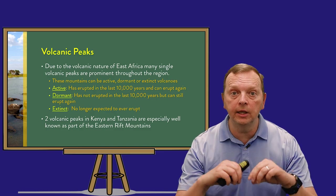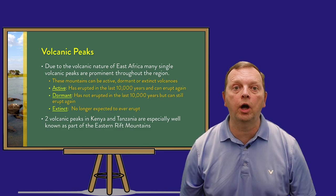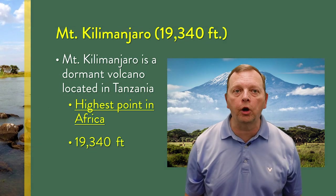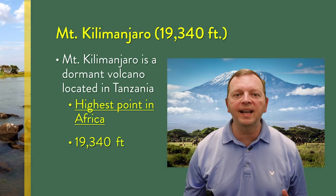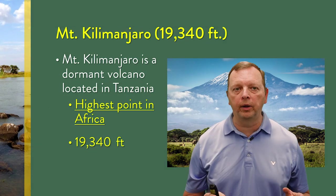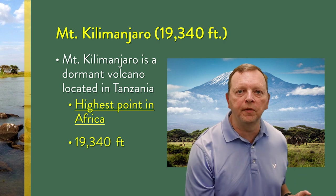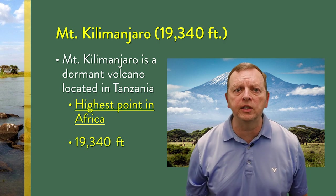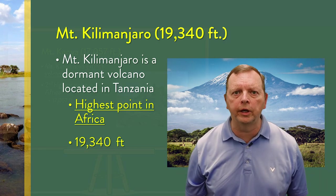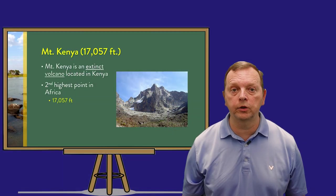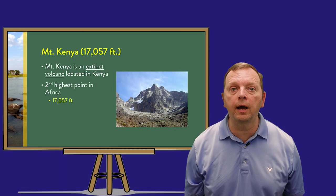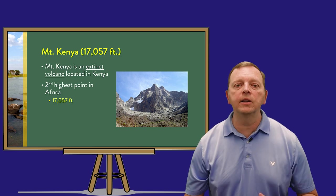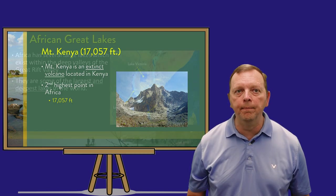It is in the Eastern Rift Mountains we find the two tallest mountains in Africa. The first is Mount Kilimanjaro, which at over 19,000 feet is the highest point in Africa. This is a dormant volcano with its last major eruption about 360,000 years ago. Mount Kenya is the second tallest mountain in Africa, and while it is a volcano, it is extinct and is not expected to ever erupt again.